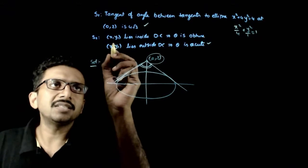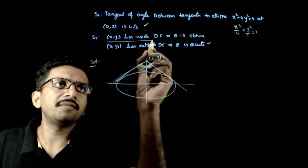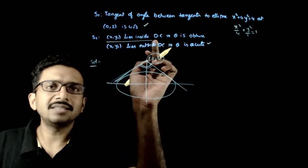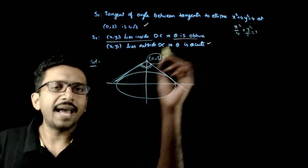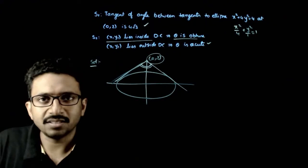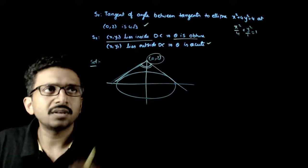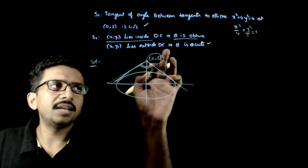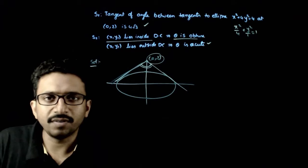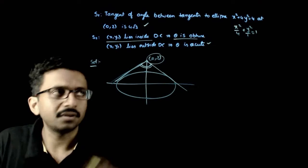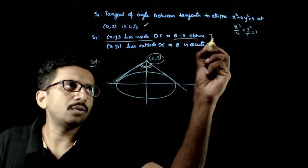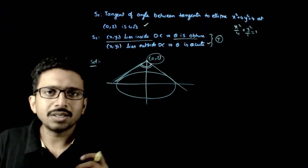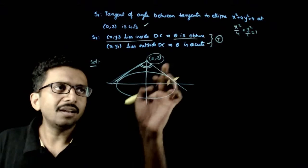The second statement is: if (x₁, y₁) lies inside the director circle, then the angle between the tangents is obtuse; if (x₁, y₁) lies outside the director circle, then the angle between the tangents is acute. This statement is true — there is no doubt about it. But what is the director circle?